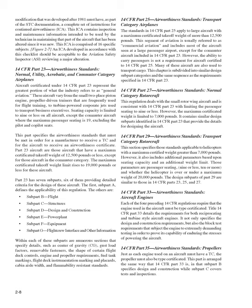14 CFR Part 23, Airworthiness Standards: Normal, Utility, Acrobatic, and Commuter Category Airplanes. Aircraft certificated under 14 CFR Part 23 represent the greatest portion of what the industry refers to as general aviation. These aircraft vary from small two-place piston engine propeller-driven trainers used for flight training, to turbine-powered corporate jets used to transport business executives. Seating capacity is limited to 9 or less on all aircraft, except the commuter aircraft where the maximum passenger seating is 19, excluding the pilot and co-pilot seats. Part 23 aircraft have a maximum certificated takeoff weight of 12,500 pounds or less, except for commuter category aircraft, where the limit rises to 19,000 pounds or less.